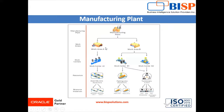Under the work area we define the work center. Work centers are specific production units that consist of people and equipment, and you can associate each work center with an active work area. Under the work center we define resources. Resources are the people and tools allocated to the work area, and they are of two types: labor and equipment. For example, an assembly line or packing line are equipment resources, and a technician is a labor resource.